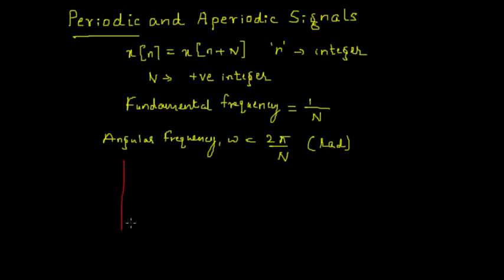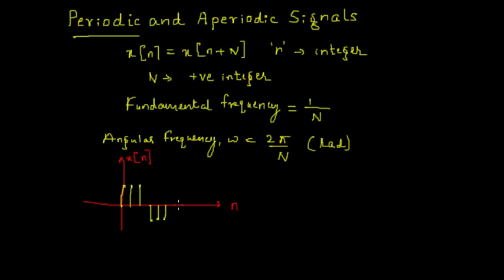To understand this better, let me draw a signal where the x-axis represents time n and the y-axis represents the signal x of n. The signal is a discrete time signal — it is not continuous and is not defined for all time. The time axis shows values 0, 1, 2, 3, 4, 5 and on the negative axis minus 1, minus 2, minus 3. If you look closely, there is a pattern that keeps repeating after some time, so these signals are known as periodic discrete time signals.